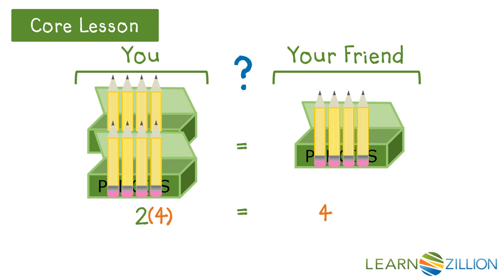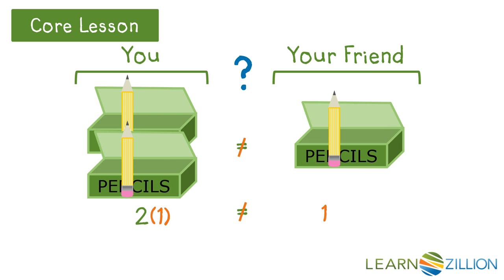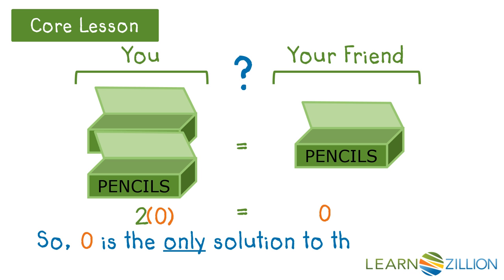If we start with 4, we can see right away that you have more pencils than your friend — 4 is not the solution. 6 is also not the solution; you still have more pencils than your friend. Even if we go down to a small number like 1, you still have more pencils than your friend. In fact, you have twice as many pencils because you have twice as many pencil boxes. So is there a value that would make this equation true? What if we put 0 pencils in each box? You have 0 pencils, your friend has 0 pencils. So 0 is the only solution to this equation — the only way for you to have the same amount is if your boxes are empty.